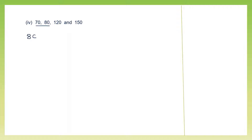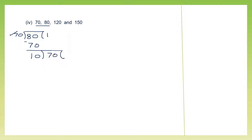Moving on to question 4 — we have 4 numbers, so first let's take the first two numbers: 70 and 80. Divide 80 by 70. 70 ones are 70, minus — remainder 10. We continue the division and put 70 inside. 10 sevens are 70, minus 0. So the HCF of 70 and 80 is 10.